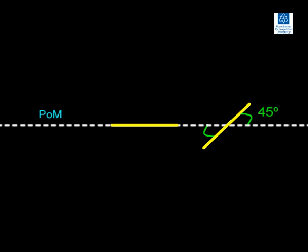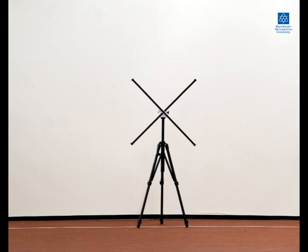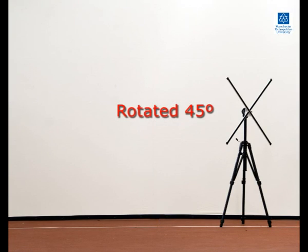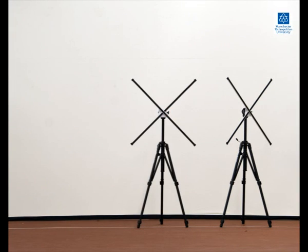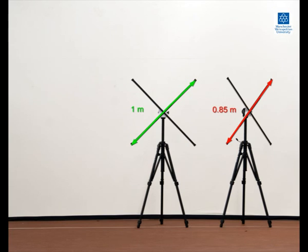Up to this point, we have investigated the effect of camera distance and movement out of but parallel to the plane of motion on measured lengths and angles. This next section investigates the effect of rotating objects out of the plane of motion on both measured lengths and angles. To demonstrate this, two images were recorded: one with the cross in the plane of motion and one with it rotated by 45 degrees. With the cross rotated out of the plane of motion, the length of the rulers appear shorter than when in the plane. The length of a one-metre ruler when in the plane of motion was used as the scaling information to calculate its length in the rotated position. The calculated length when rotated out of the plane of motion equated to 0.85 metres.